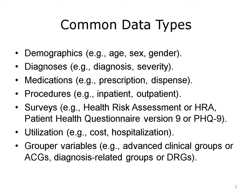Data collected by patient surveys, such as the Health Risk Assessment (HRA) and the Patient Health Questionnaire Version 9 (PHQ-9), which is designed to measure the severity of depression. Utilization information such as cost, hospitalization, admission to ER, readmission, and so on. And finally, a set of derived variables that categorize other variables into meaningful groups. These grouper variables are often generated by a variety of commercial and non-commercial applications, including advanced clinical groups (ACGs), diagnosis-related groups (DRGs), and others. In this lecture, we will focus on diagnosis, medication, and procedure data types.